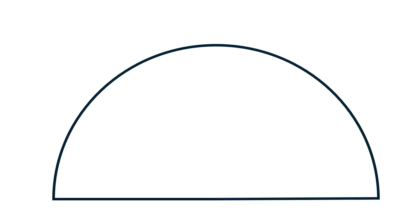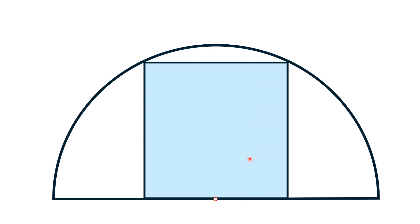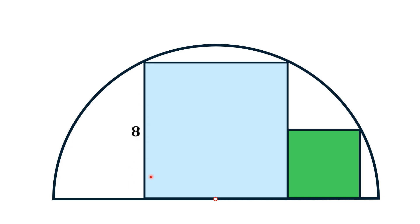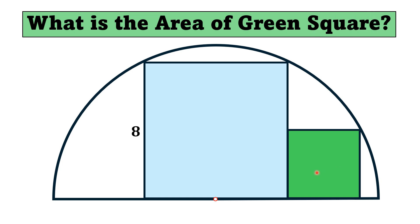Hello everyone. In this problem, a semicircle is given in which a square is inscribed such that the center of the semicircle divides one side of the square into two equal parts. There is another smaller square inside the semicircle, touching the side of the larger square. The side length of the larger square is 8 units.